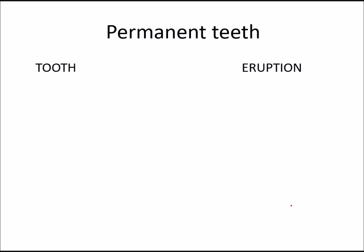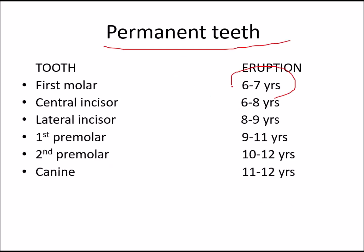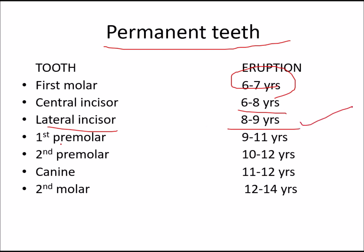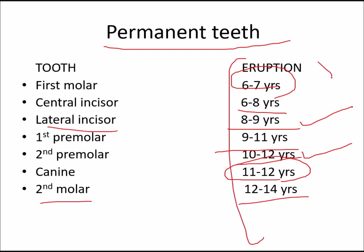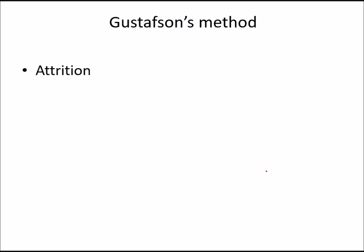For permanent teeth eruption: first molar at 6–7 years, central incisor at 6–8 years, lateral incisor at 8–9 years, first premolar at 9–11 years, second premolar at 10–12 years, canine at 11–12 years, and second molar at 12–14 years.